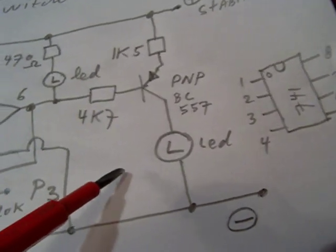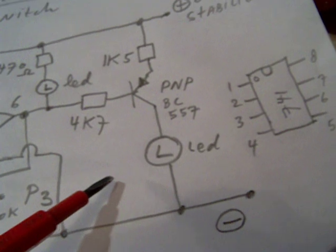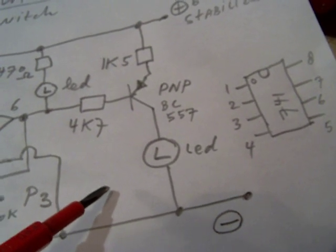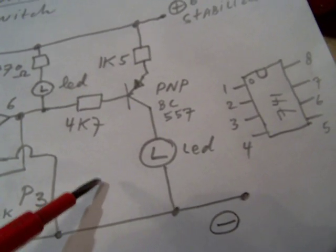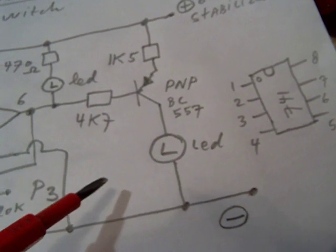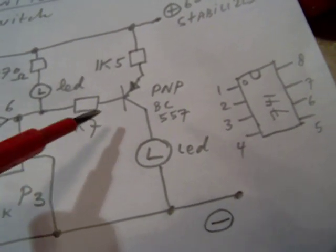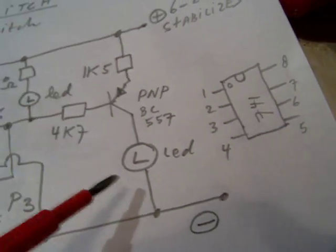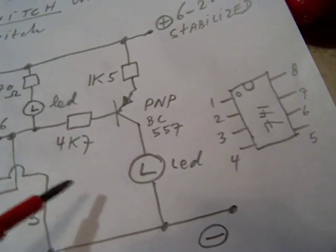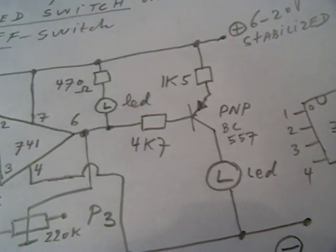You can also use a very small printer relay and then you can switch a higher current. When you want to switch a very heavy current, you need another construction, a Darlington with a power transistor. But that is all in my book.